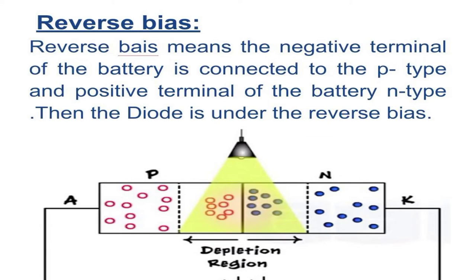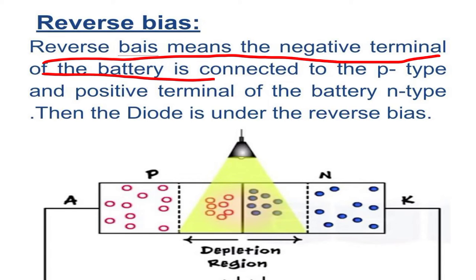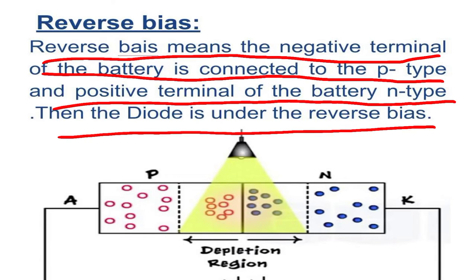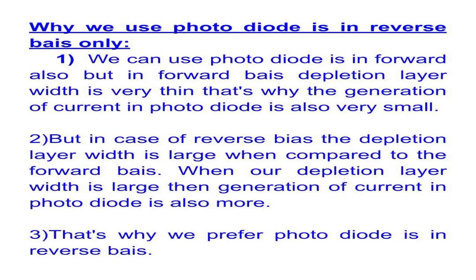The photodiode is connected only in reverse bias. Reverse bias means the negative terminal of the battery is connected to the P-type and the positive terminal is connected to the N-type, putting the diode under reverse bias condition.